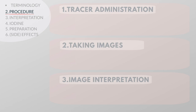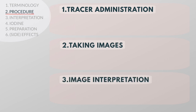A thyroid scan consists of three phases: tracer administration, taking images, and image interpretation. The amount of time between administration of the tracer and the taking of the images may range from a few moments to a few days. The time depends on the tracer being used.